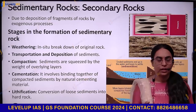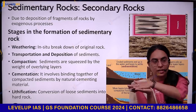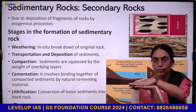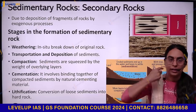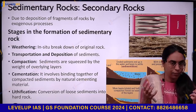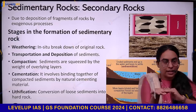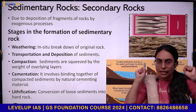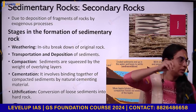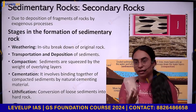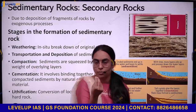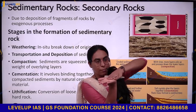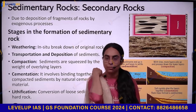Sedimentary rocks can be formed in three ways. They can be mechanically formed — sediments just coming together and being mechanically arranged. They can also be organically formed — organisms like coral reefs secreting calcium carbonate sediments which come together through compaction, cementation, and lithification to form limestone.